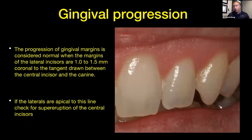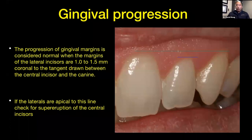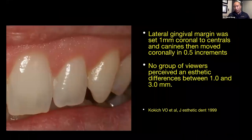As far as gingival progression goes, when we're looking at the gingival zeniths of the centrals, laterals, and canines, generally speaking we want our centrals and canines to be on a level plane. The lateral incisors are going to be anywhere from one to three millimeters incisal to that line — on average, we shoot for one to one and a half millimeters incisal to that line drawn between the central and the canine. When you look at and interview people looking at photos of teeth, lay people don't notice differences between one and three millimeters of height difference between the centrals and the lateral incisors.